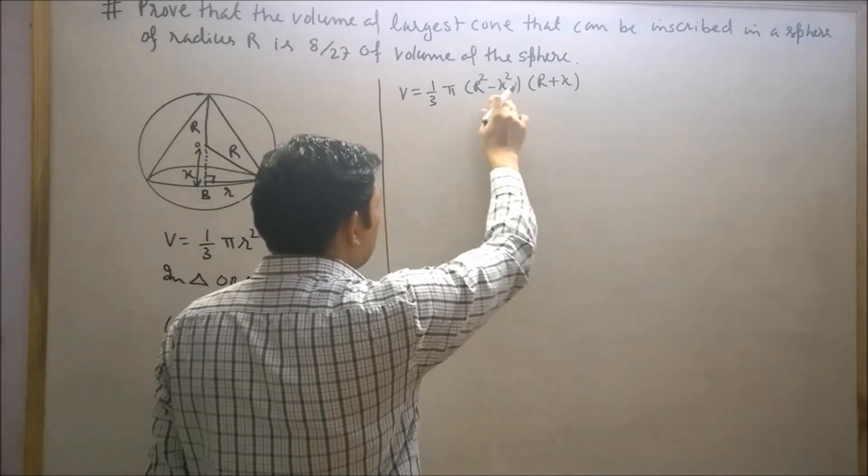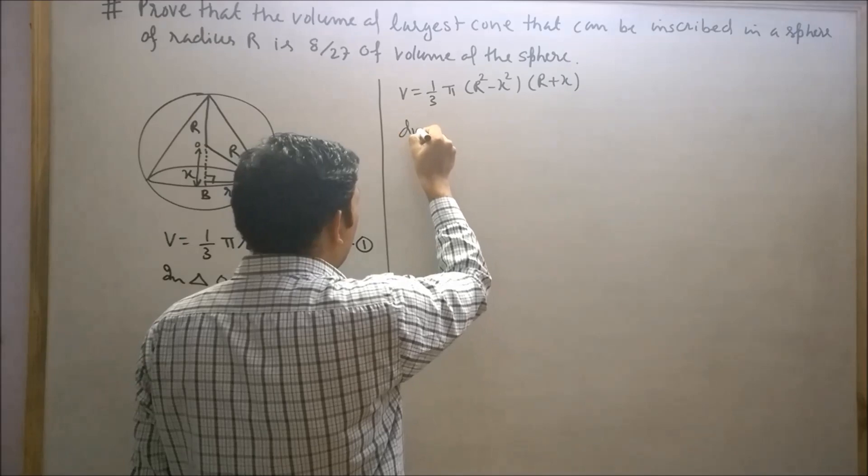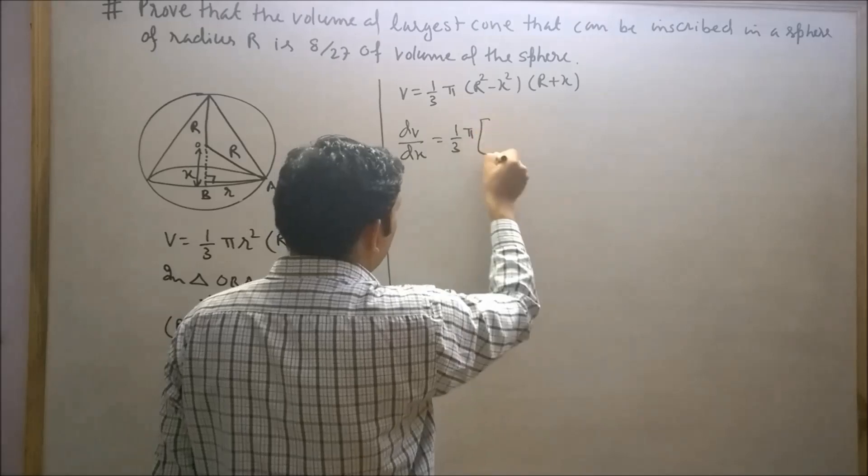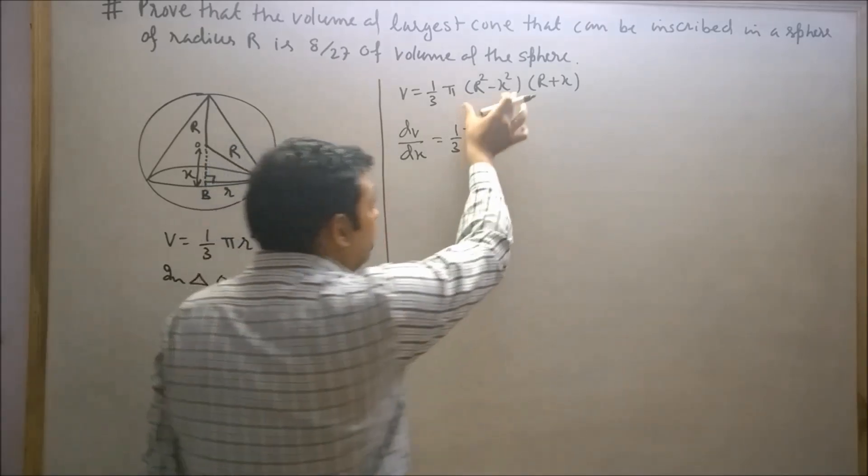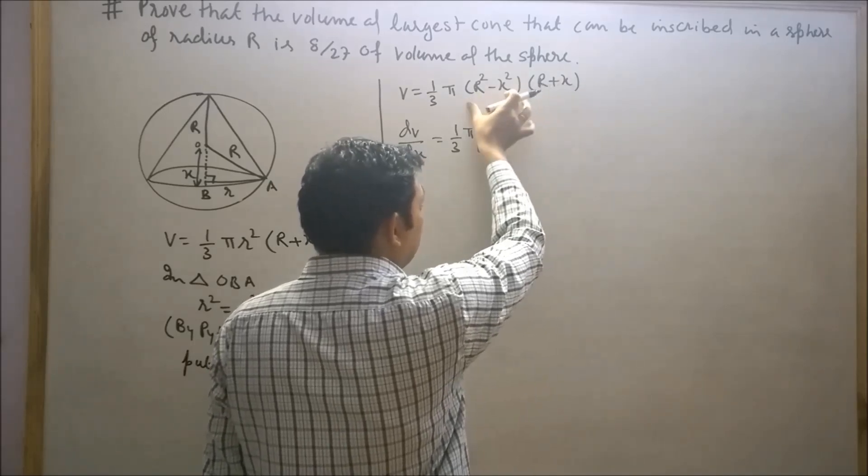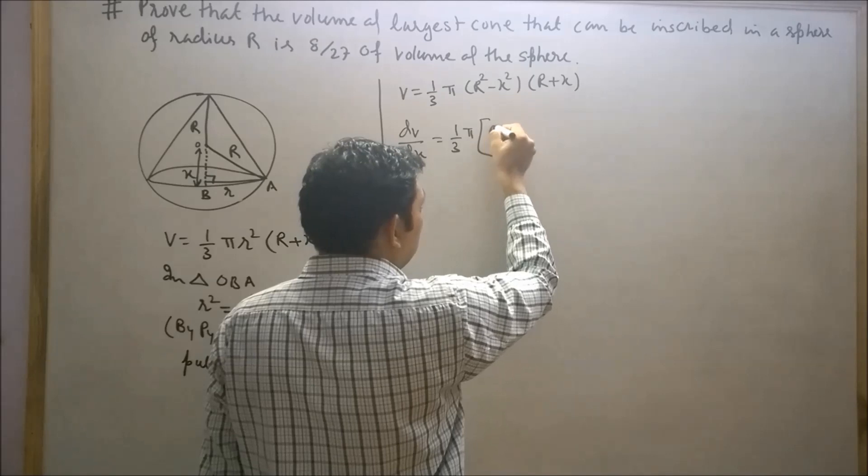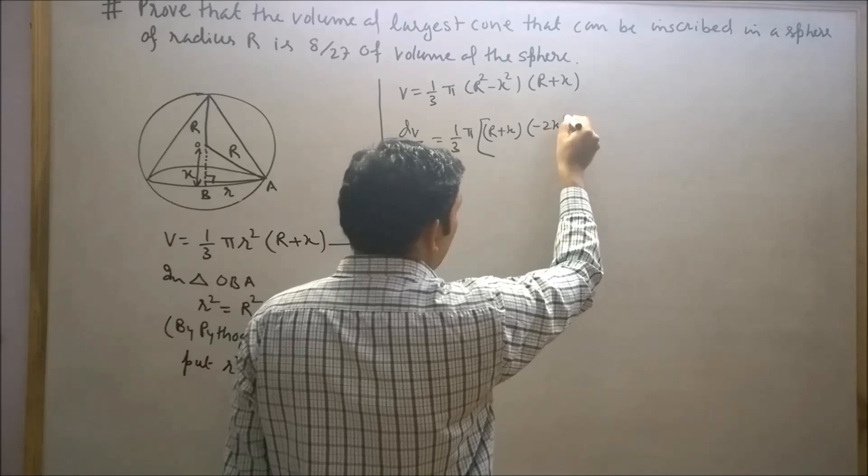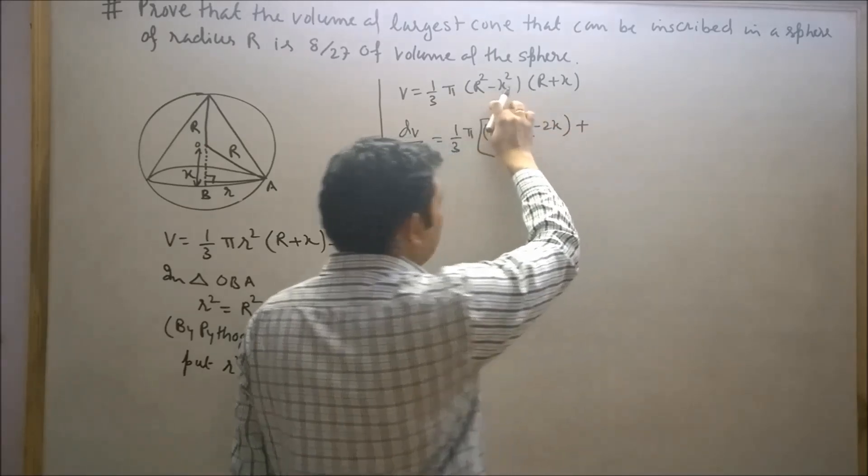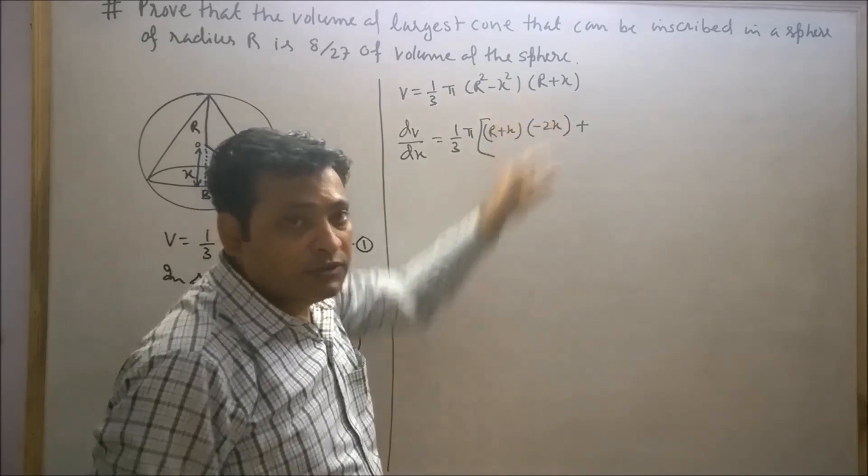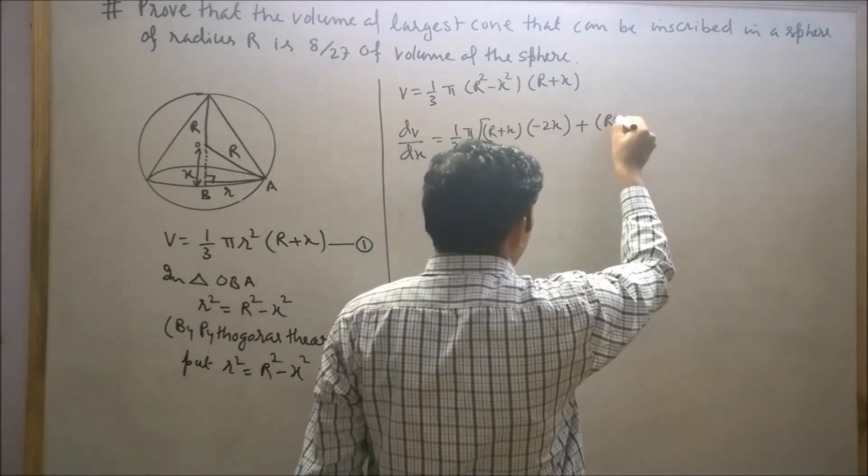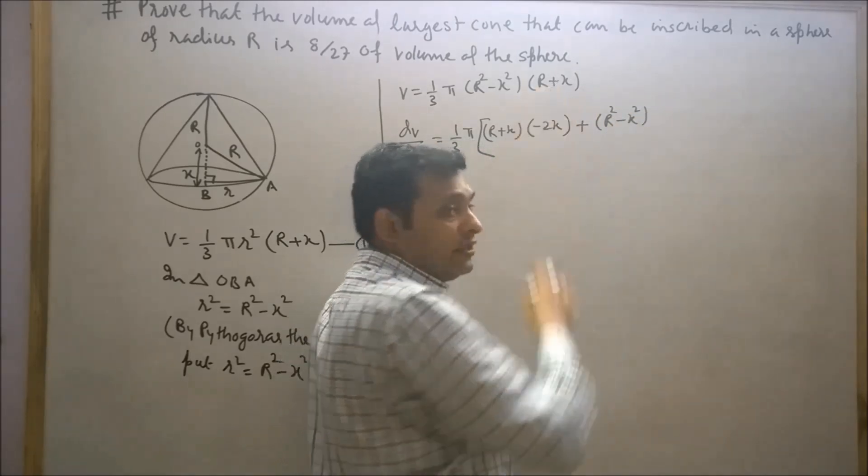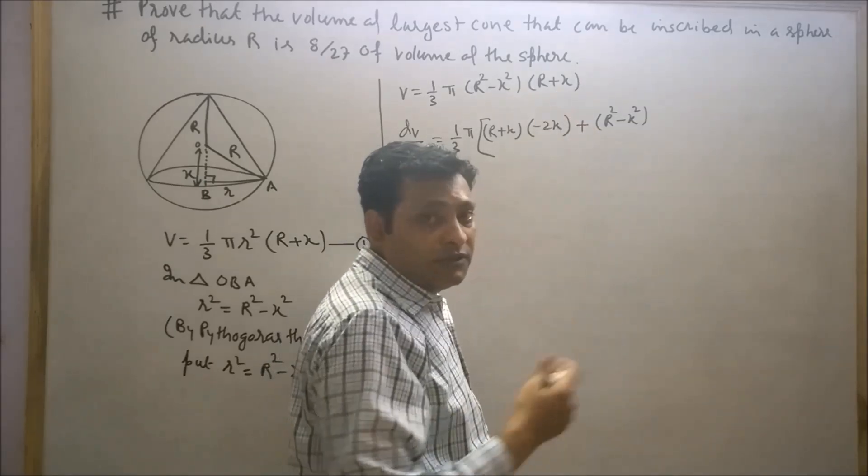Now differentiate this with respect to x. So dV/dx will equal 1/3 π. Now apply product rule. We will differentiate this part and multiply by the other: (R + x)(-2x) plus (R² - x²)(1), since R is constant and the differentiation of x with respect to x is 1.